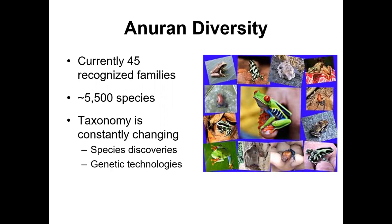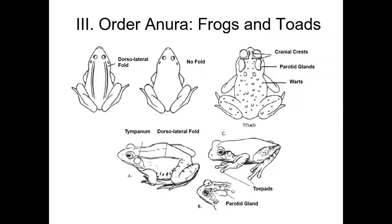This taxonomy is constantly changing. We are still finding new species, largely through genetic technologies, because there are groups of frogs that look very similar morphologically but are genetically distinct — serving as cryptic species. We're finding new species of frogs and toads every single year, so that number is always increasing.